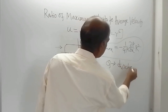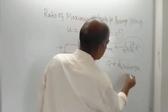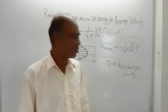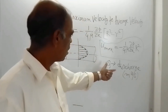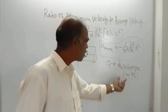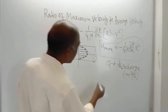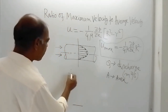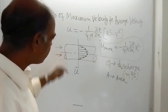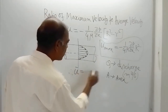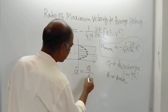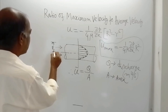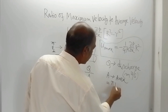Q is the discharge, with units of meter cube per second in SI. The average velocity U-bar is equal to Q divided by area A. Here the radius of the pipe is R, so the cross-sectional area A is equal to πR².